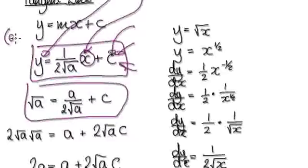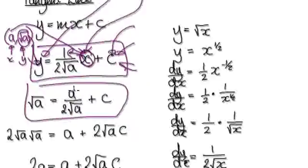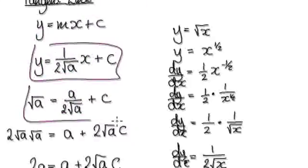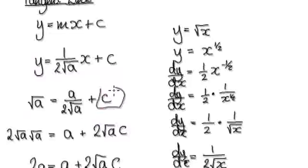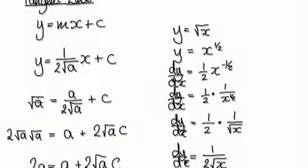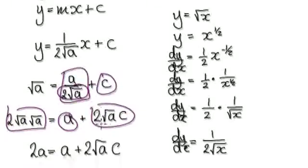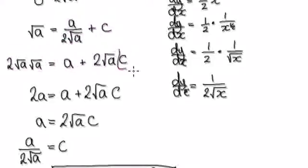The coordinates are (a, √a). This is your x and this is your y. Substituting into y = mx + c: √a goes into y, a goes into x, and a multiplied at the top gives a over 2√a. I prefer to multiply everything through by 2√a. This times 2√a gives you a; this times 2√a gives you the next term. So now we have the expression and want to isolate c.